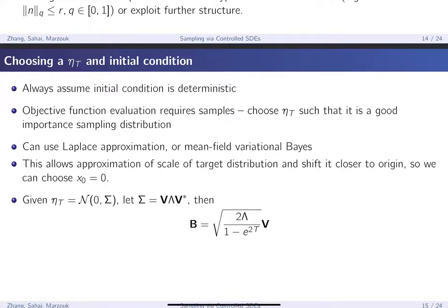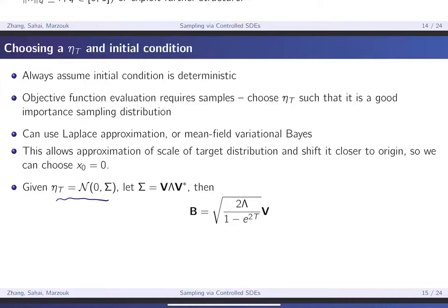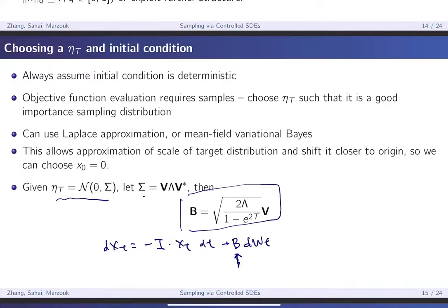After getting a Gaussian approximation to your distribution, say ηₜ is a normal distribution with covariance matrix Σ, you might ask how to find the B term in your SDE. Given ηₜ and time T, you can figure out B according to the eigenvalue decomposition of Σ and then choose B accordingly.